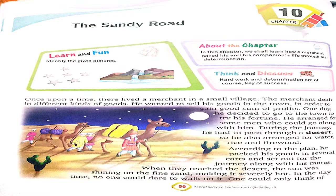Sandy ka matlab hota hai reela road jahaan se hamare camel vagaira jaate hain, because camel ke alaawa vahaan par aur koi animal transport ke liye use nahi ho sakta. Camels ko bhi use kiya jaata hai in the desert area. This chapter is about how a merchant saved his company — apni saathi ki jaan usne kaisi bachai — through his determination.